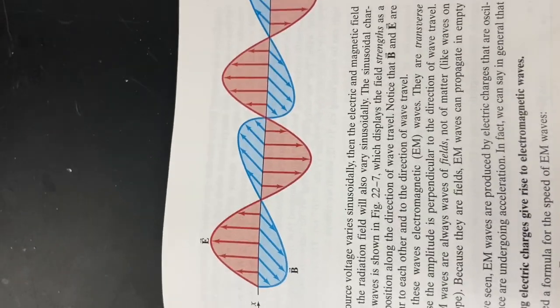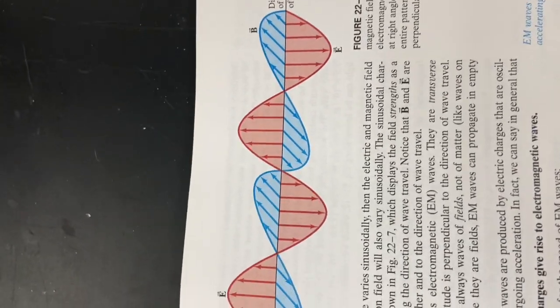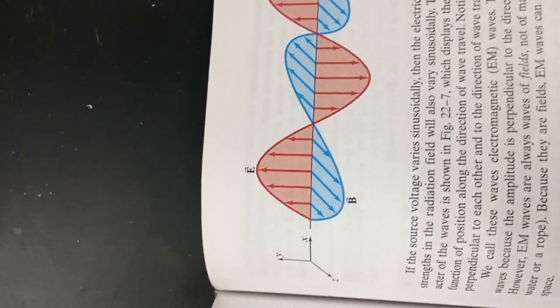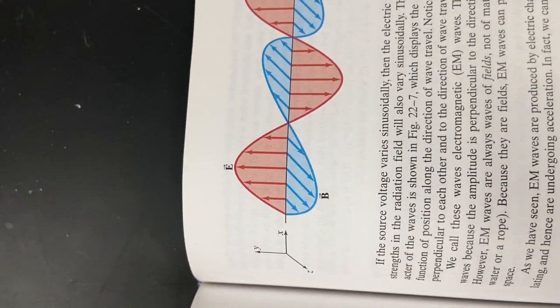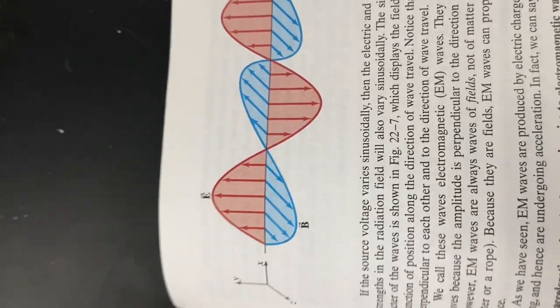And all light, radio, micro, infrared, ROYGBIV, ultraviolet, x-ray, gamma ray, is all that stuff. So the only difference is the antenna, so to speak, changes its direction maybe more frequently to make the waves have a higher frequency.